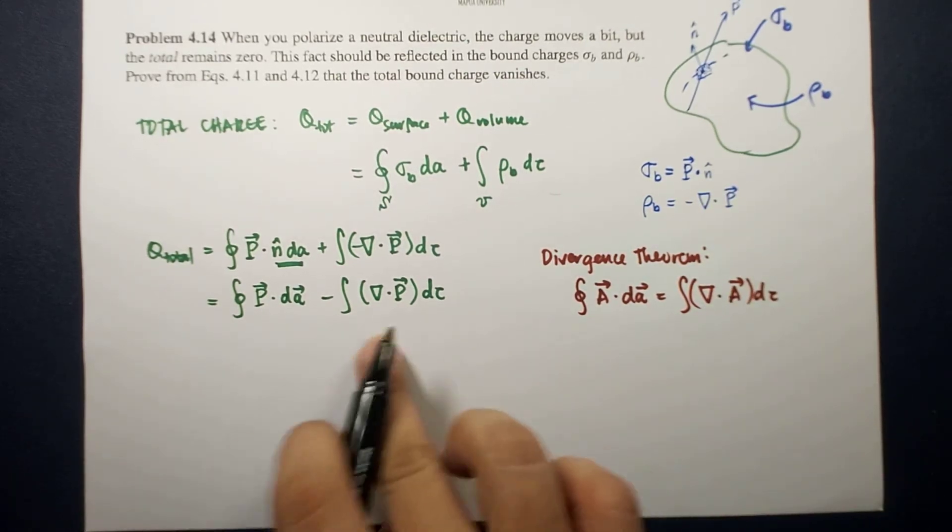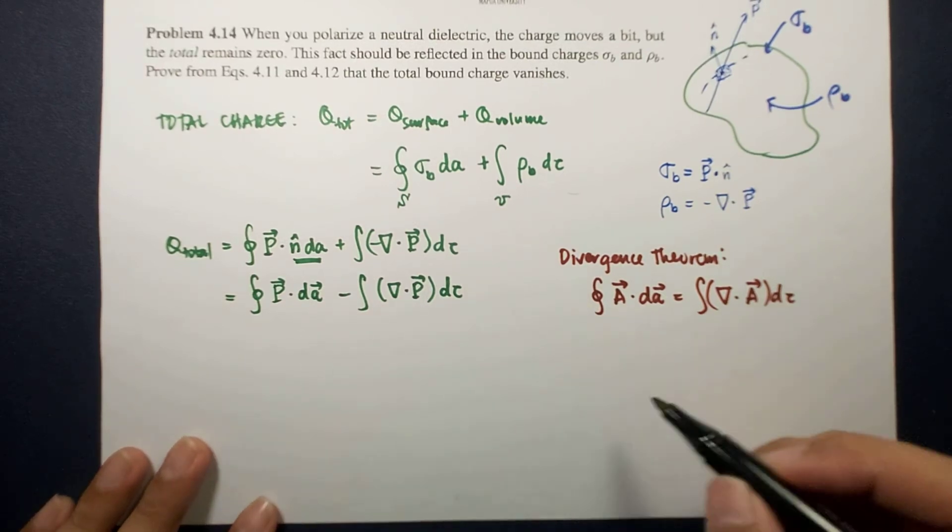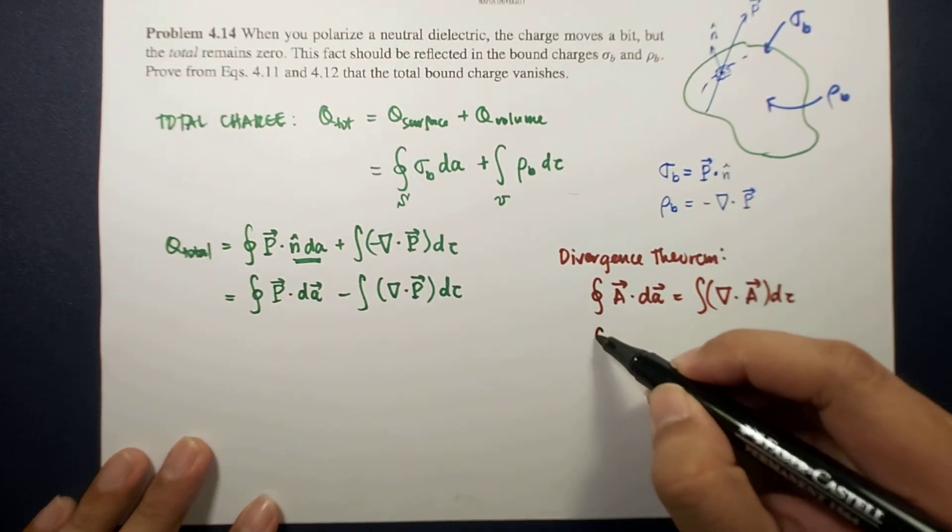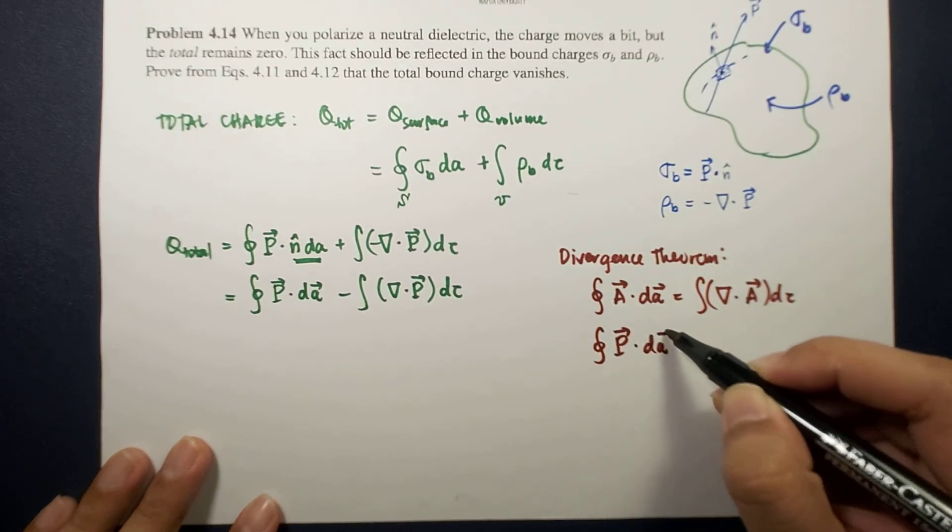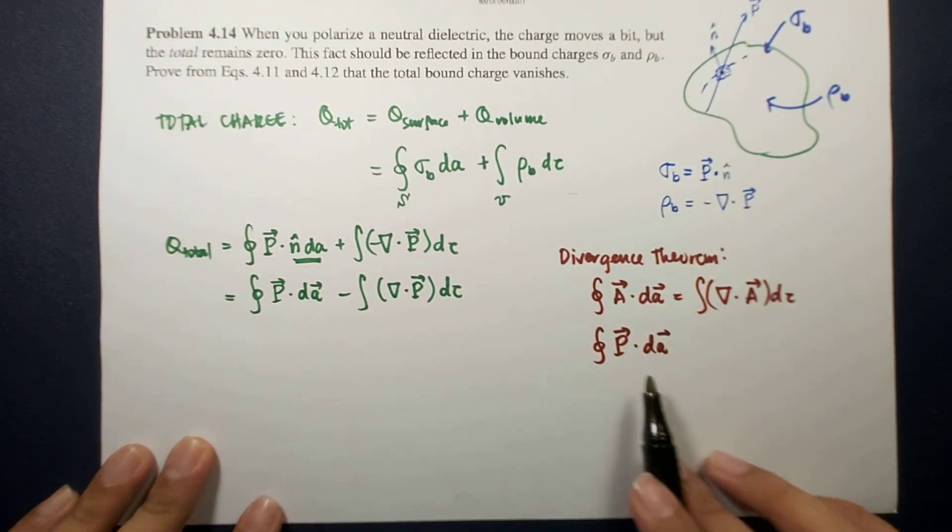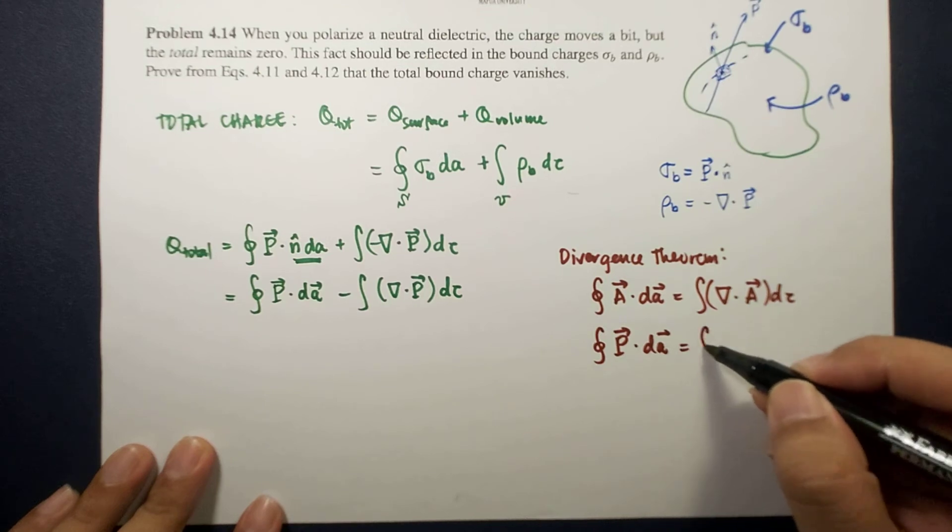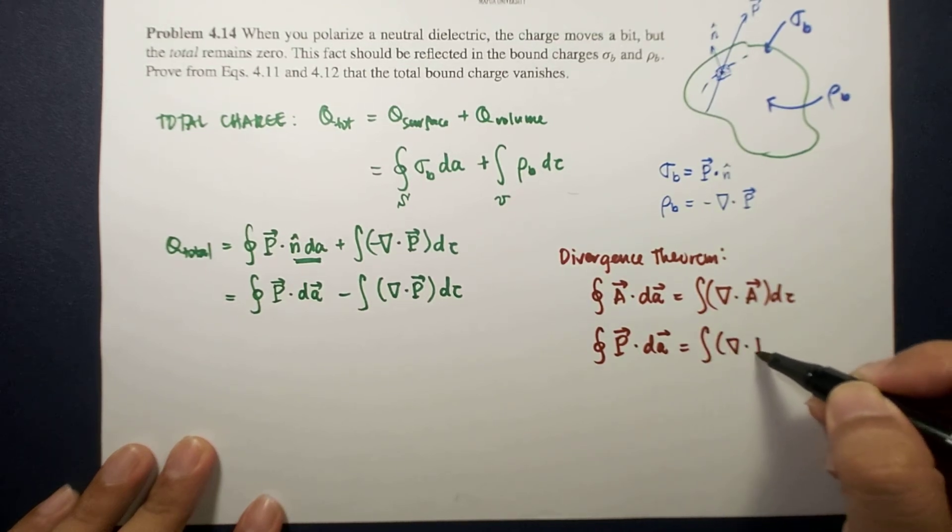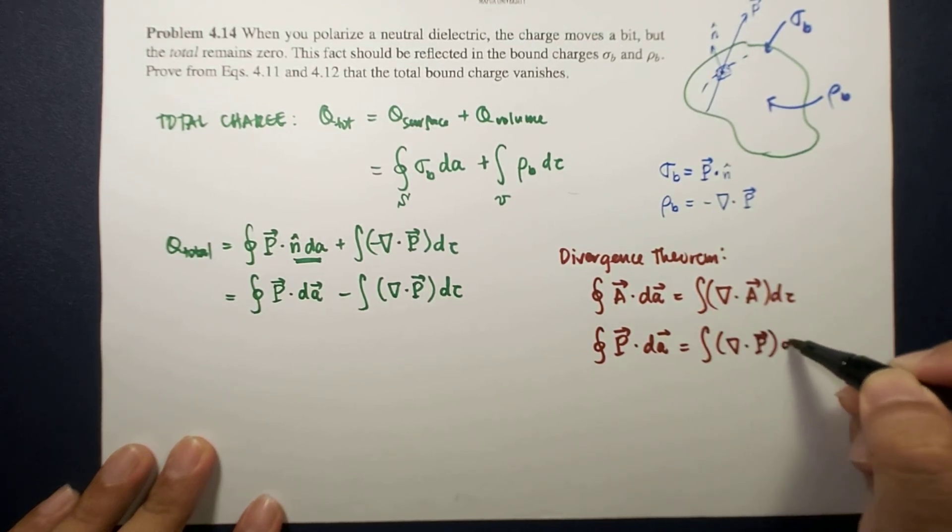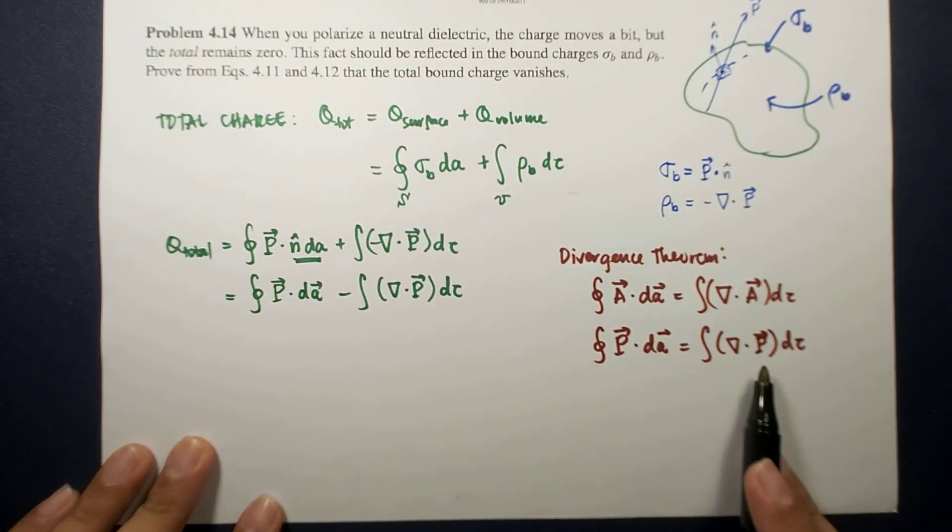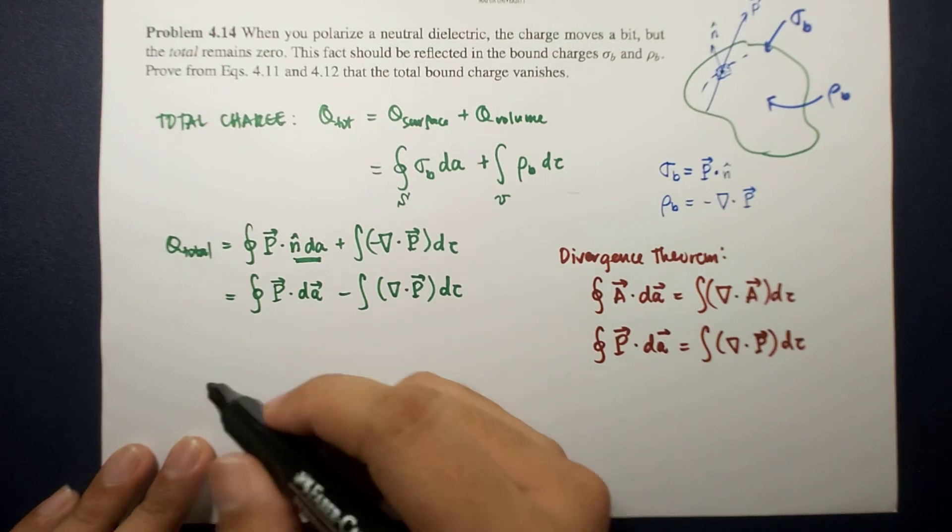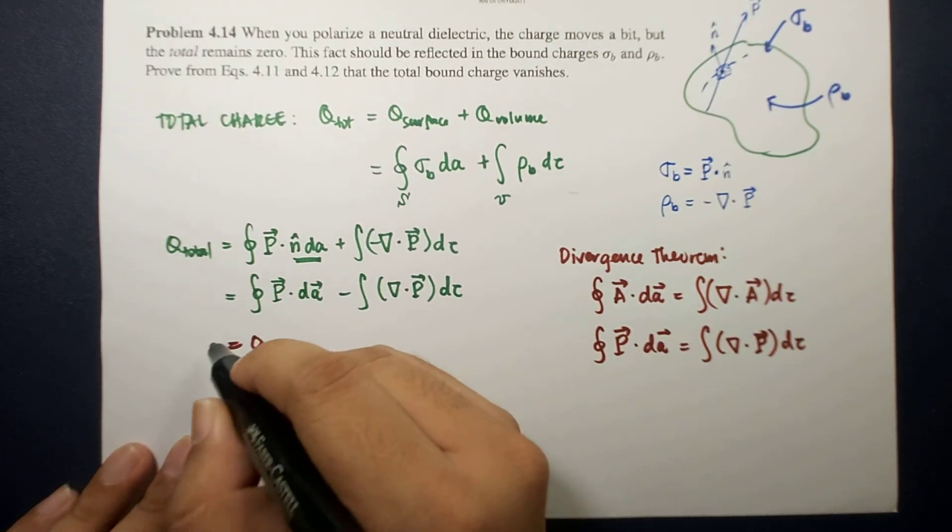Applying this here, we can see that the integral of P dot dA is actually equal to the integral of the divergence of P dV. So this is equal to this. This is minus. Therefore, this is equal to zero.